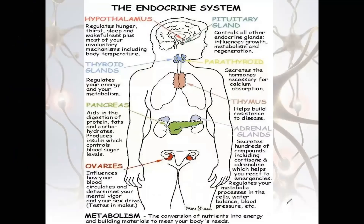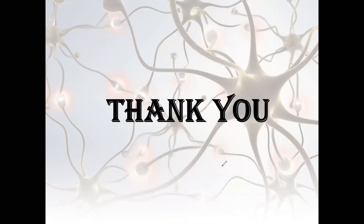One more figure shows the hypothalamus, thyroid, pancreas, ovaries, parathyroid, thymus, and adrenal glands — with the secretion and role of each written out. We have finished the entire chapter about the endocrine system.